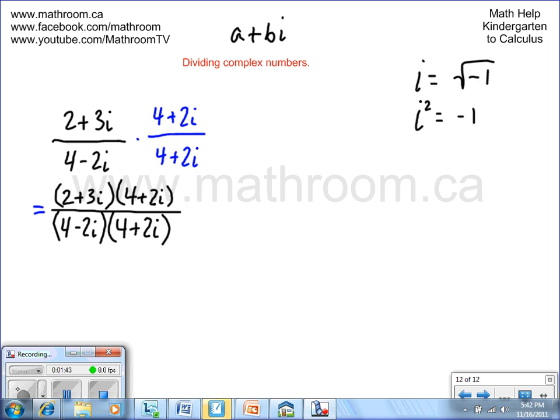Let's solve the top first. We're going to use the same distributive properties that we would normally in algebra. We're going to distribute the 2 with both the 4 and the plus 2i, and we're going to distribute the 3i with both the 4 and the plus 2i.